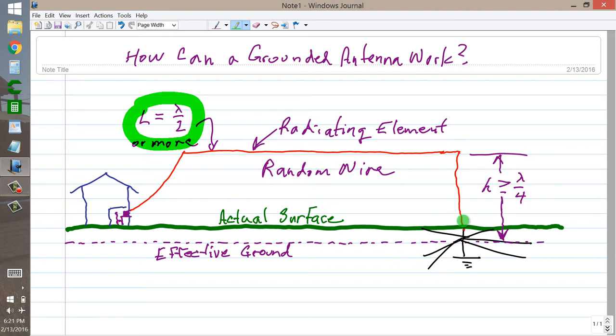but all the current loops would turn into nodes, and all of the current nodes would turn into loops. But the thing would still work just about the same for your radio, whether it's grounded or not.